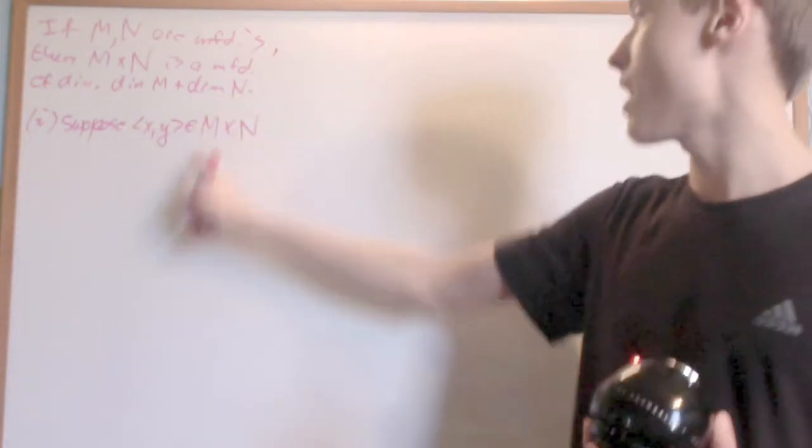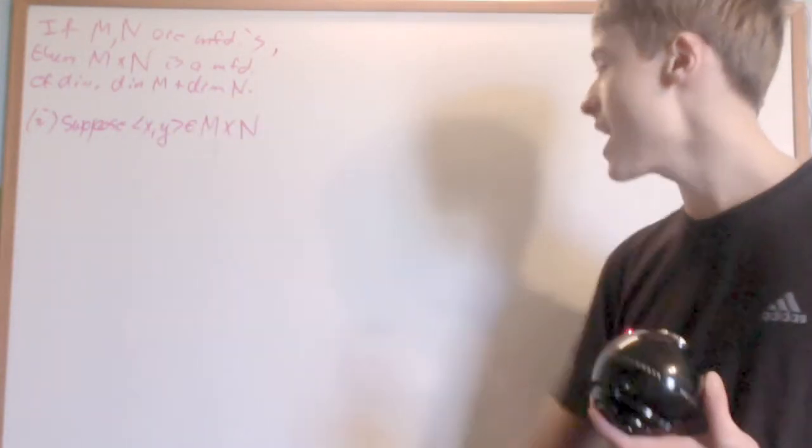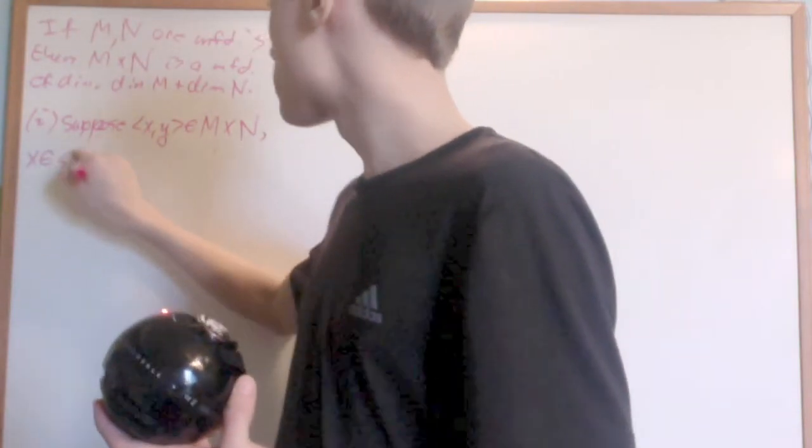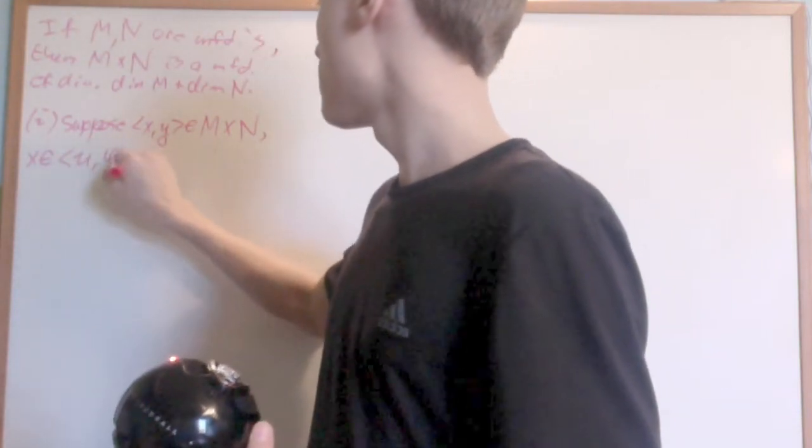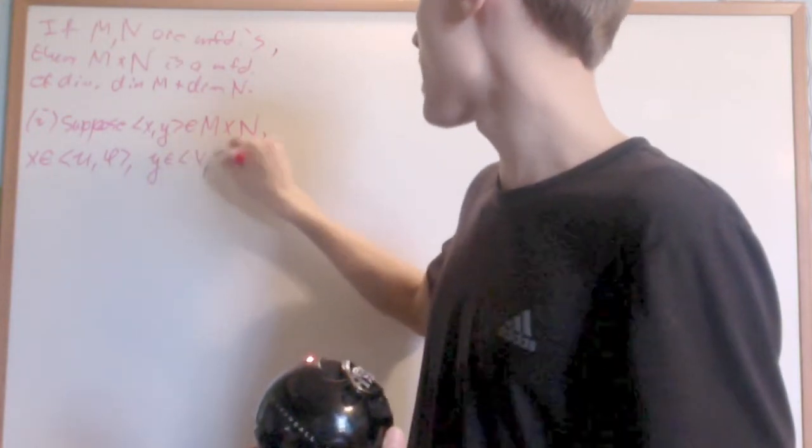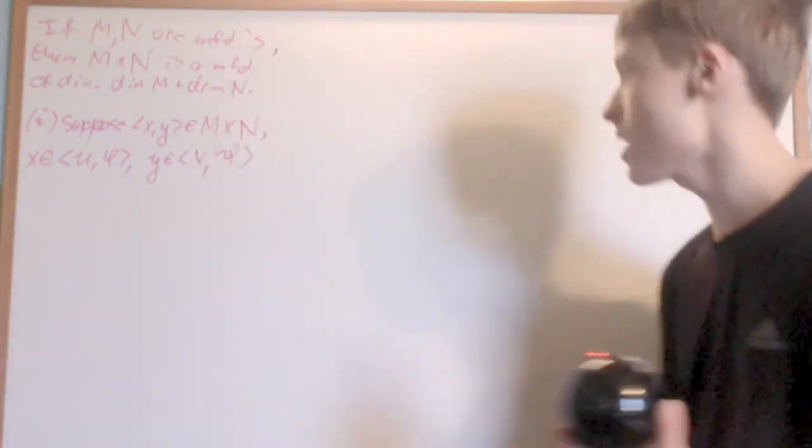X is an element of M, Y is an element of N. We can use that fact to our advantage because then X is going to be an element of some chart U phi, and Y is going to be an element of some chart V psi by the fact that M and N are manifolds.